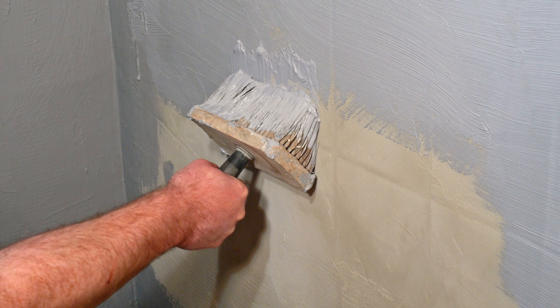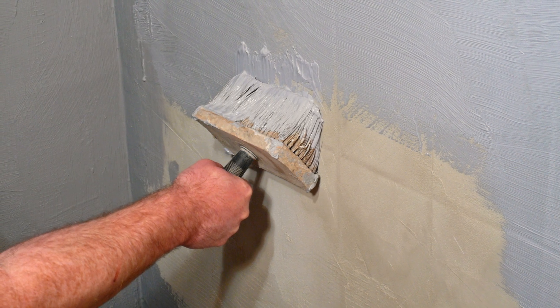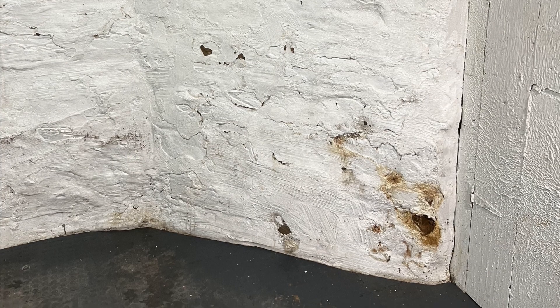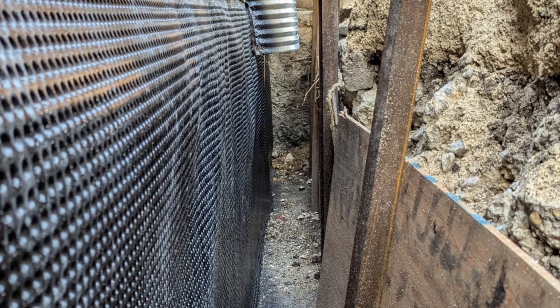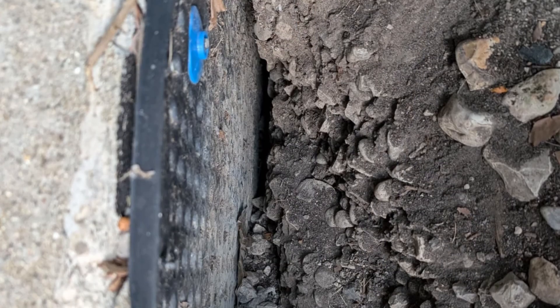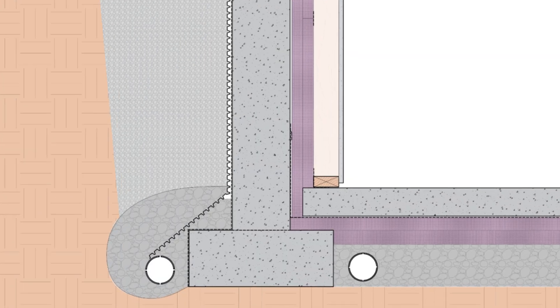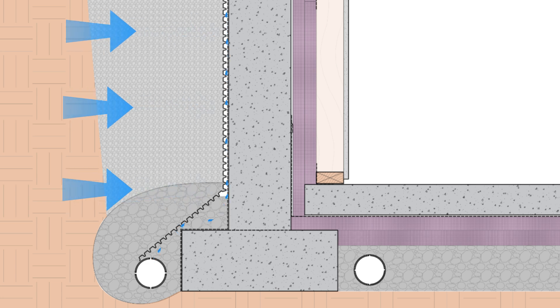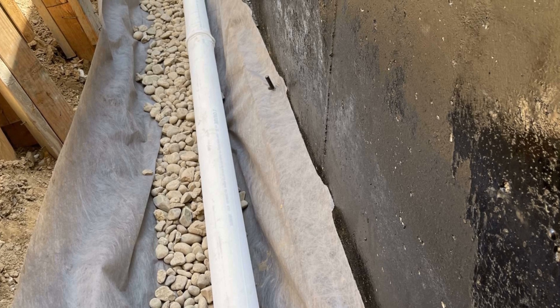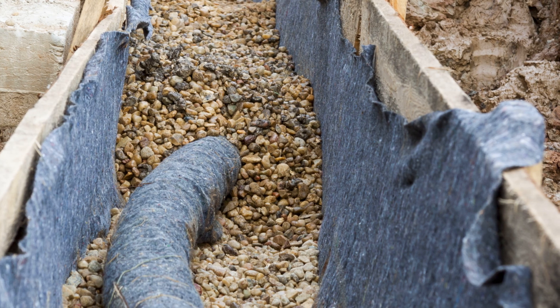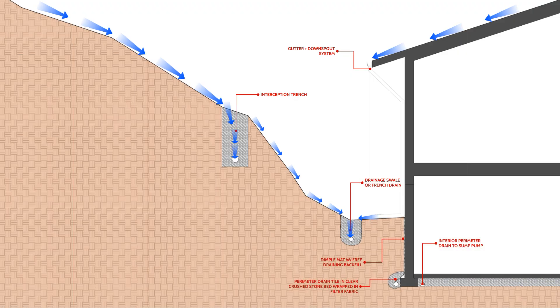Waterproofing should never be the one thing that you rely on to keep your basement dry — it should be the last line of defense. Why can't you just waterproof the interior side with a coating? It's simply not reliable and doesn't address the core problem — it's a band-aid. You need drainage in the form of a gap between the surface of the waterproofing and the backfilled soils to alleviate hydrostatic pressure against the walls. We want water that finds a path around the foundation to be drained quickly to a perimeter drain and directed away from the foundation.